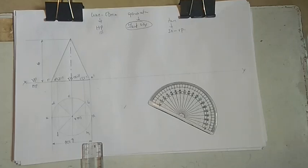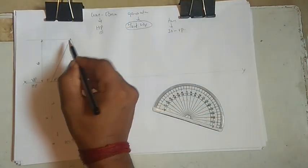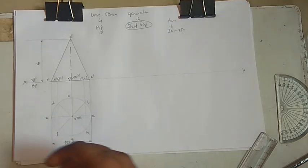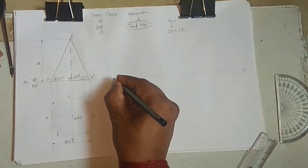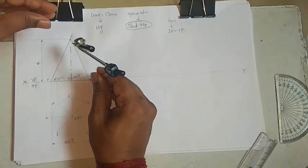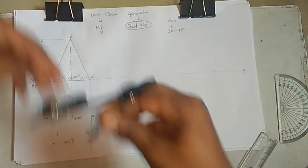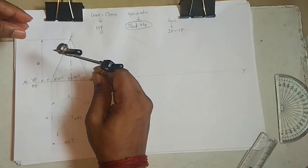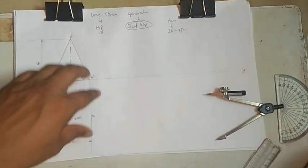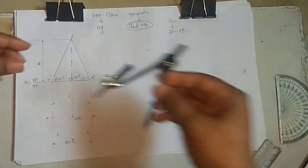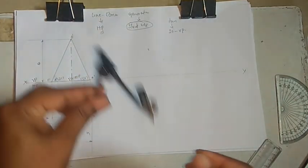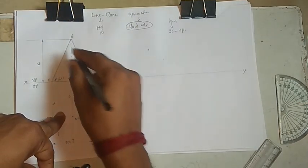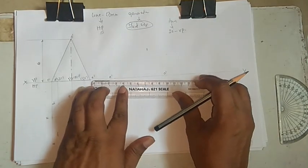Since the cone is resting on the generator — which is the slant edge — take the generator O-dash to A-dash. Cut one arc from O to A, then transfer that length onto the XY line. A-dash rests on HP, so place it on the reference line. This gives us A-dash and O-dash. Join them with a dark line.